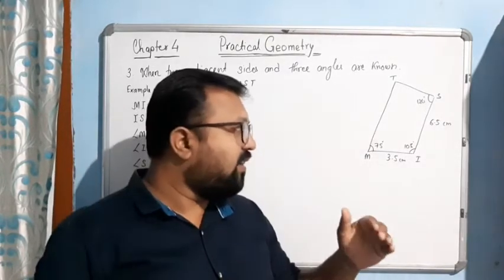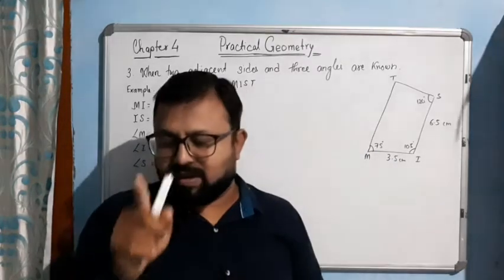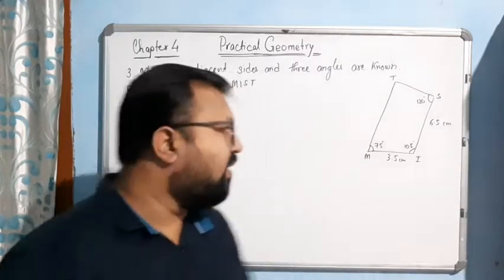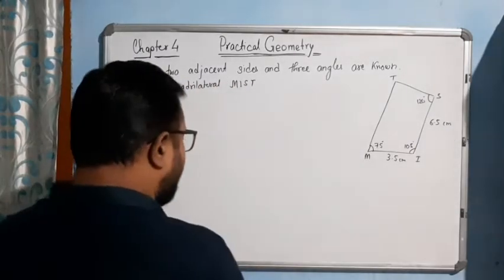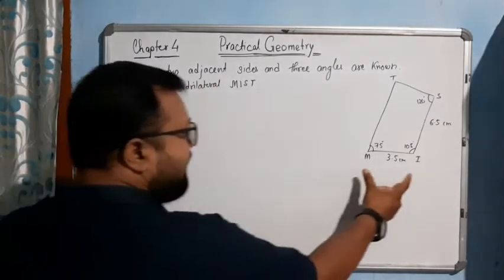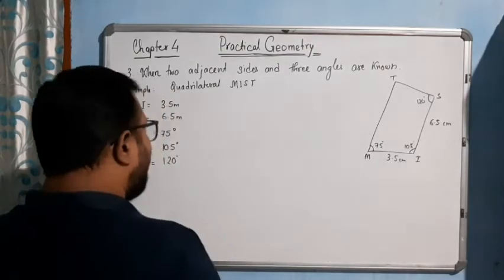Other than that, you have to use a protractor. Now, how will we construct? Let's take the base MI equal to 3.5 cm. Draw the line segment MI equal to 3.5 centimeters using your scale.